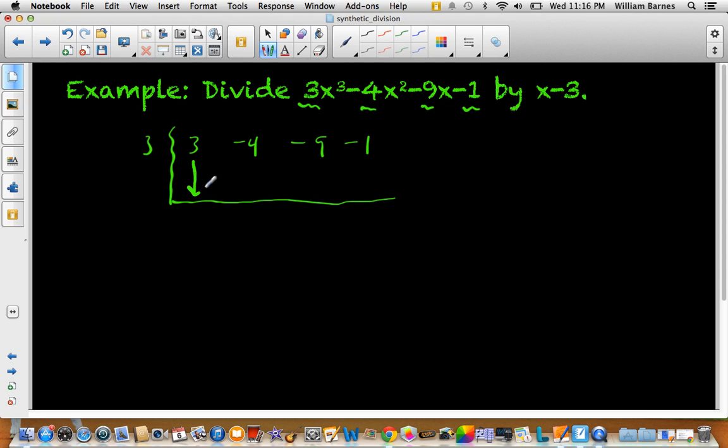So what we do first, we drag down our 3 that goes to the bottom here. So we end up with 3. Then we're going to take these two numbers and then we're going to multiply them. So we have 3 times 3 is 9. And then what we need to do with these two numbers is we need to add them. So negative 4 plus 9 is 5. Then we'll multiply the 3 and the 5. So that's 15. And then what we're going to do is we're just going to add these. So negative 9 plus 15 is 6. And then 3 times 6 is 18. Negative 1 plus 18 is 17.